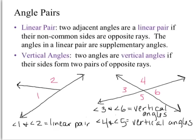Vertical angles are across from each other. Same with 4 and 5 — opposite side. If their sides form two pairs of opposite rays, so all of these sides form two pairs of opposite rays.